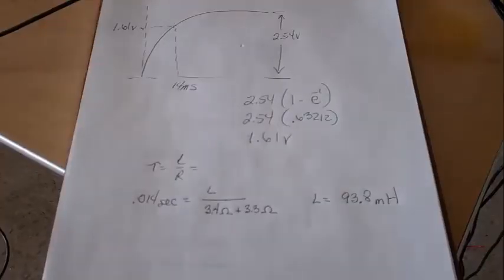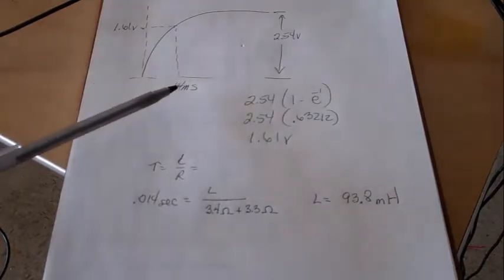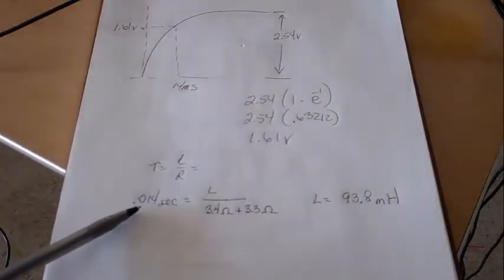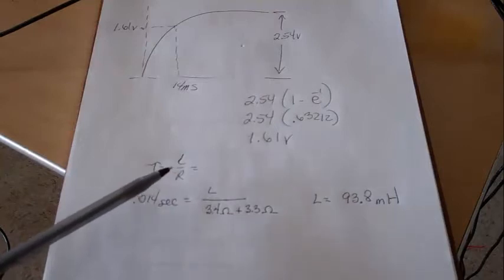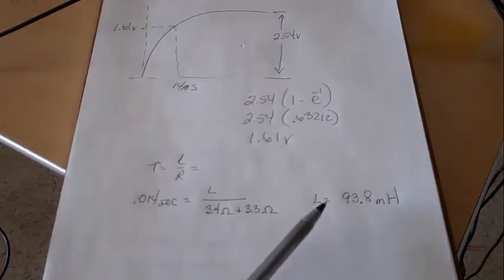And then calculate the inductance. Since the time constant is 14 milliseconds and the total resistance of this circuit is 3.4 ohms plus 3.3 ohms, the measured inductance is 93.8 millihenries.